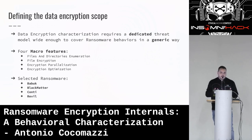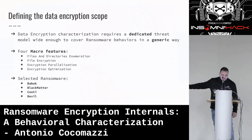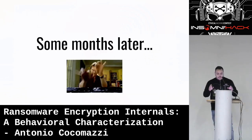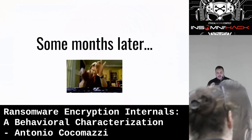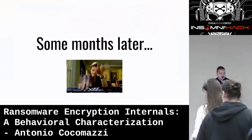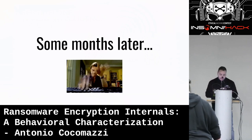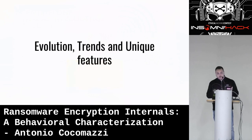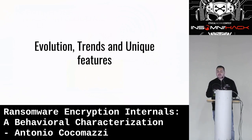I selected the ransomware families I was most interested in: Babuk, BlackMatter, Conti, and REvil, which at the time of my research were the most dangerous ransomware around. I then spent months reverse engineering all of these samples — it required a lot of time. In this presentation I've packaged my very long research into a 45-minute presentation, so I'm not going to present every specific detail for every family. Instead, I'll provide intelligence insights — highlighting the main evolution, trends, and unique features observed in the ransomware landscape.